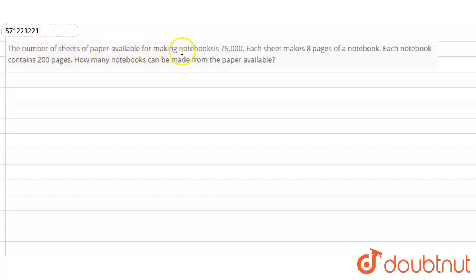The number of sheets of paper available for making notebooks is 75,000. Each sheet makes 8 pages of a notebook. Each notebook contains 200 pages. How many notebooks can be made from the paper available?